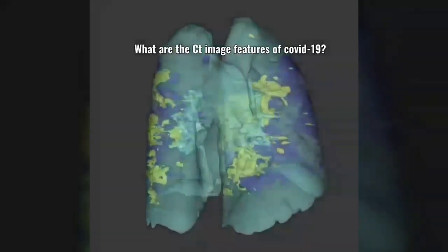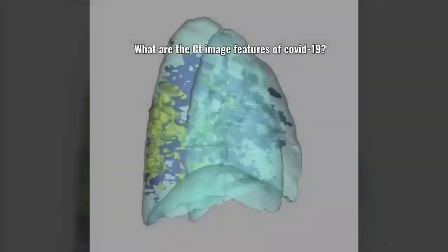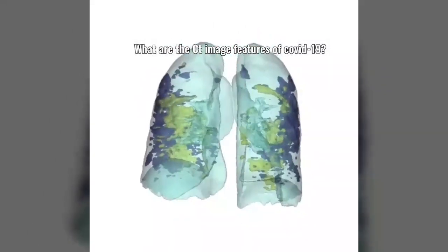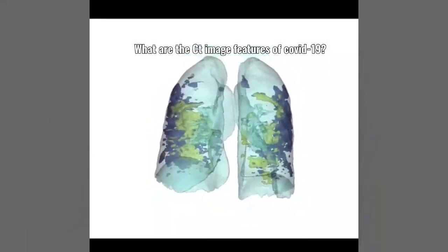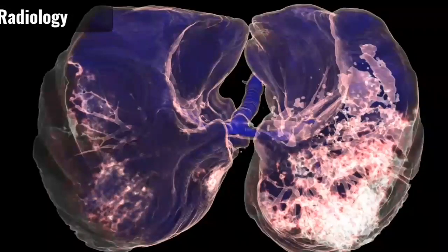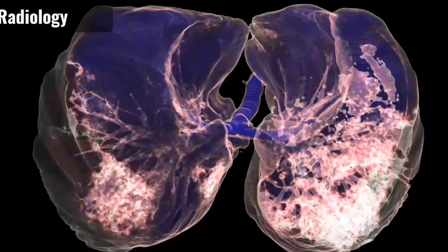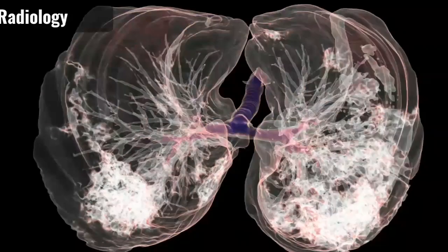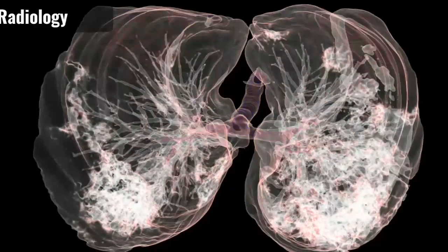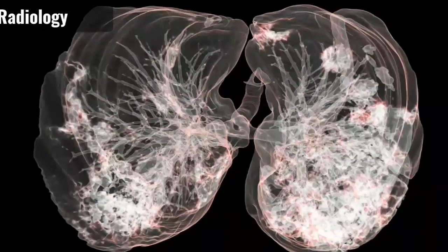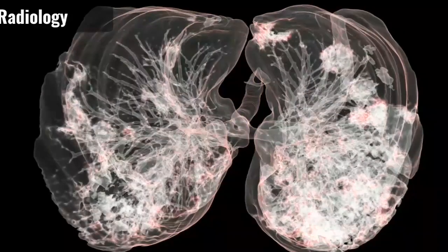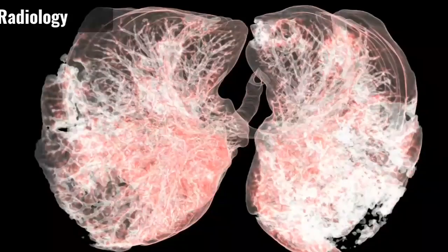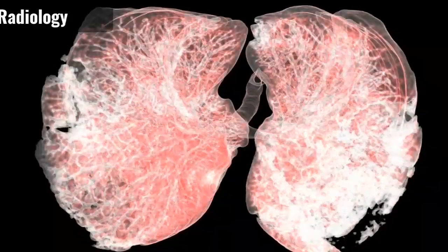What are the CT scan image features of COVID-19? Ground glass opacities pattern is the most common finding in COVID-19 infections. They are usually multifocal, bilateral, and peripheral.